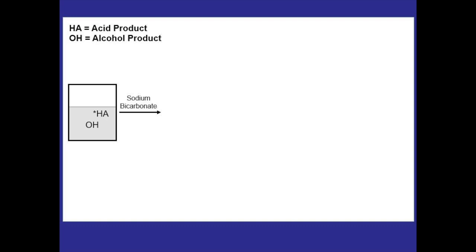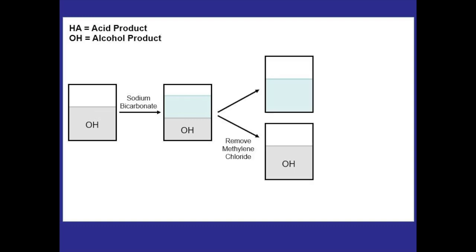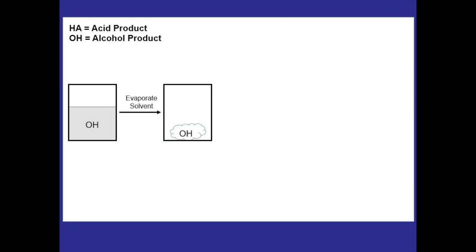Rinsing the organic layer with sodium bicarbonate is optional — only needed if insufficient sodium bicarbonate was used initially and neutral acid remains. If we do rinse, use a conservative amount to minimize losing alcohol product. If there's no remaining acid nothing visible happens, but if acid is left over we'll see CO2 bubbles. Either way, remove the methylene chloride layer afterward and dry it with sodium sulfate, then evaporate the solvent to get the crude alcohol.